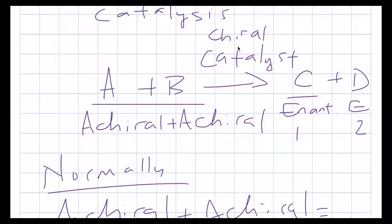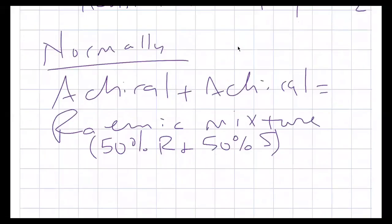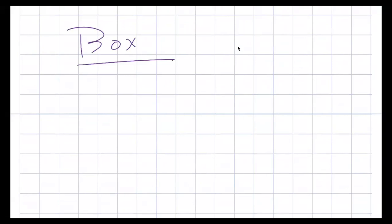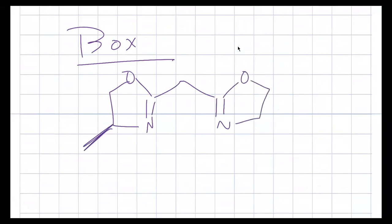For this chiral catalyst example, one of the easiest, simplest, and probably oldest chiral catalysts would be something like what we call a BOX catalyst. A BOX catalyst looks like this — on one side you have a chiral center with an R group, and on the other side you have a chiral center that is usually bound to a metal.